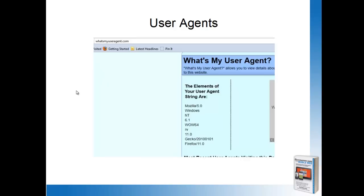What you'll see in your user-agent string are the operating system, the type of computer you're using, the type of browser you're using to access a website, and so forth. So this is for a PC.